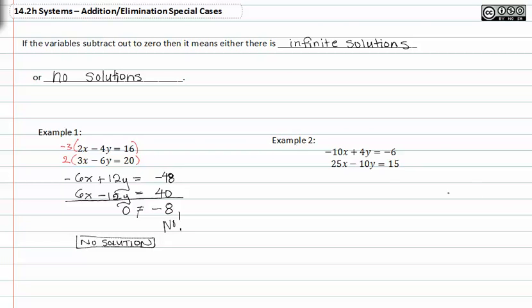In example two, we try to multiply to get terms to drop out once again. If we wanted to clear these y's, let's go ahead and multiply by ten in one and four in the other.